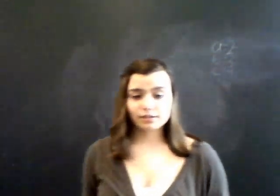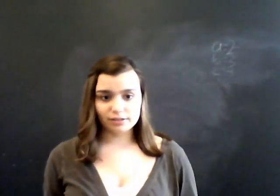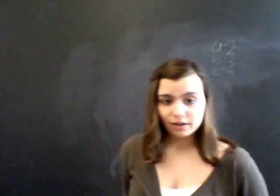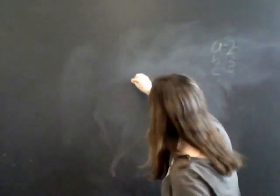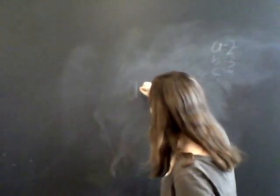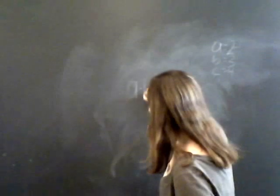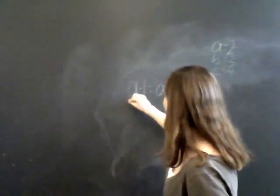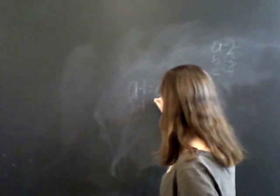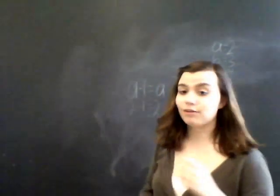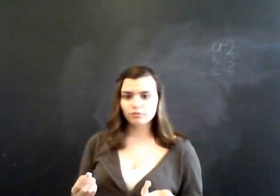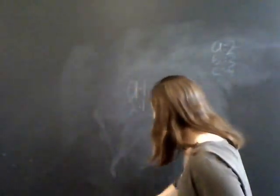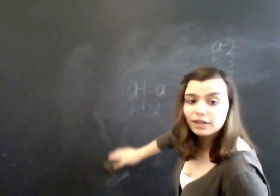The next property is the multiplicative identity property. This is also a pretty basic one. A times 1 equals a. Plugging it in: 2 times 1 equals 2. If you have one group of 2, you have 2.